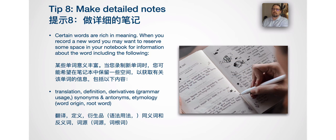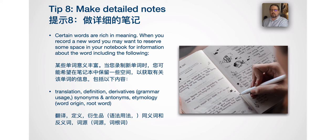Tip number eight is to make detailed notes. Certain words are rich in meaning. When you record a new word, you may want to reserve some space in your notebook for information about the word, including: translation, definition, derivatives, grammar usage, synonyms and antonyms, etymology, and the word origin or root word.